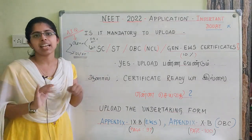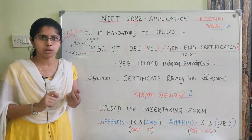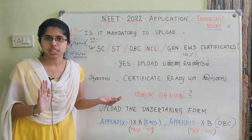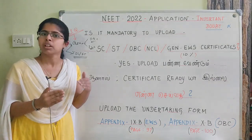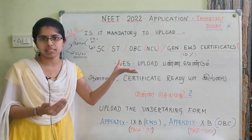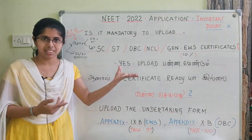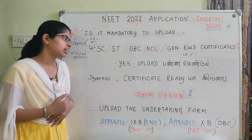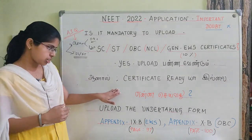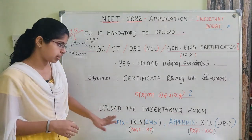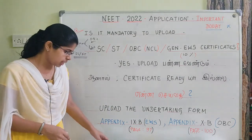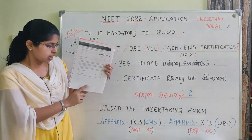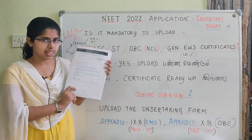The certificate is based on income. We are able to keep this certificate permanently. This is used in Medical Counseling. There is an undertaking form — not just a certificate — in Medical Counseling. Page number 97, Appendix 9B, is the EWS quota undertaking form.